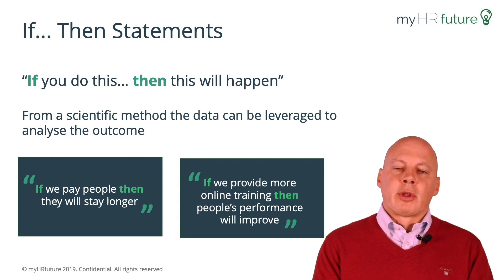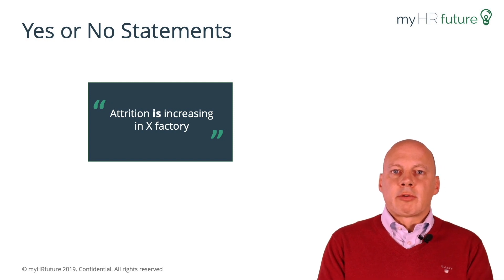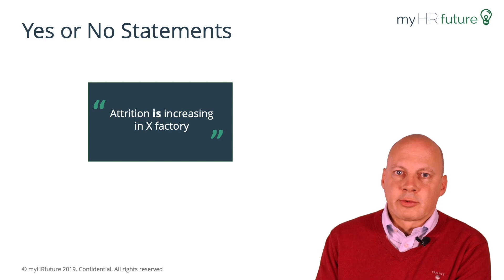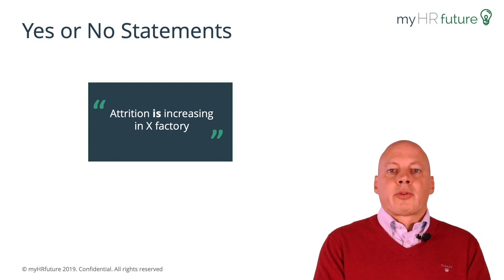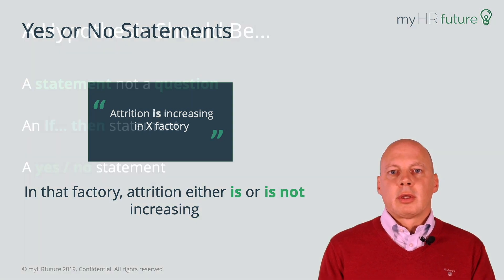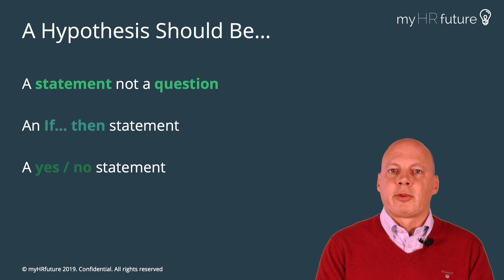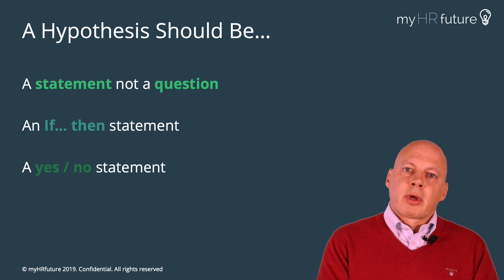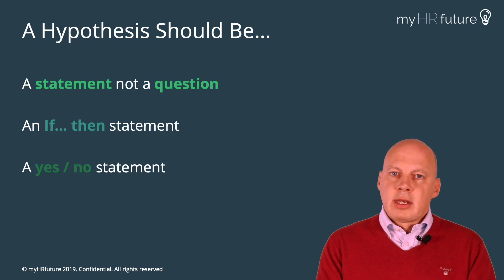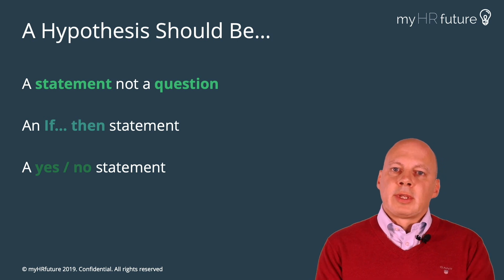The other technique is the straightforward yes-no, where the statement is simply: attrition is increasing in our X factory. It's either increasing or it's not — yes or no. There may be supplementary questions that lead to multiple hypotheses, and we'll talk about that later. Just remember: a statement, not a question — either if-then, or a straightforward yes-or-no statement.